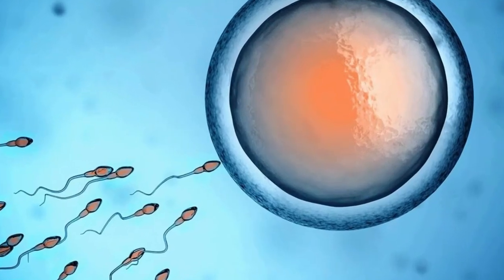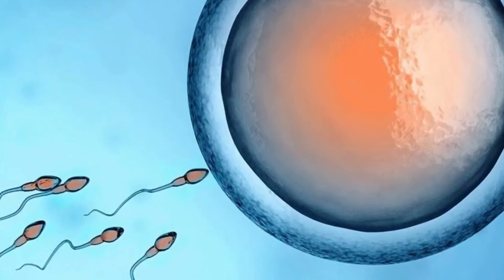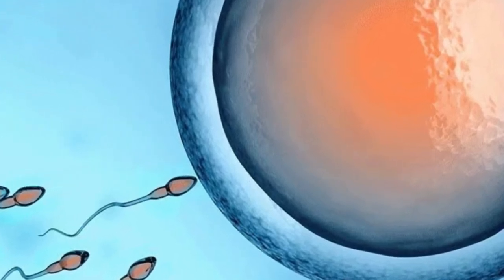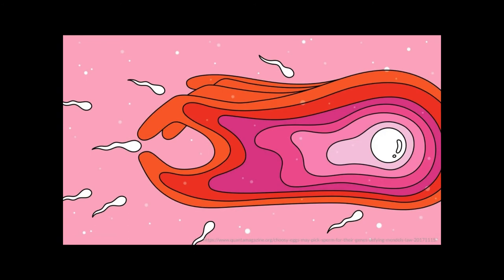Different organisms utilize different strategies for fertilization, but there are major events that take place in the fertilization of all animals regardless of species. These events include the contact and recognition between the sperm and the egg. Once the sperm and the egg make contact they need to fuse, but the entry of the sperm needs to be regulated to prevent more than one sperm from uniting with one egg.